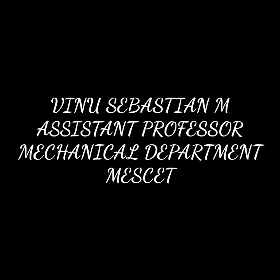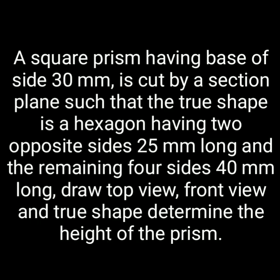Hi students. We are going to take a look at the square prism and the irregular hexagon. A square prism having a base of size 30mm is cut by a section plane such that the true shape is a hexagon having two opposite sides 25mm long and the remaining four sides 40mm long.